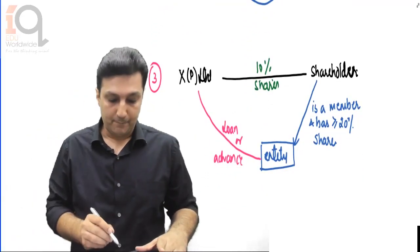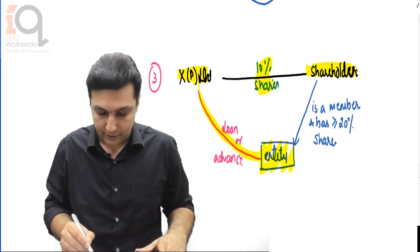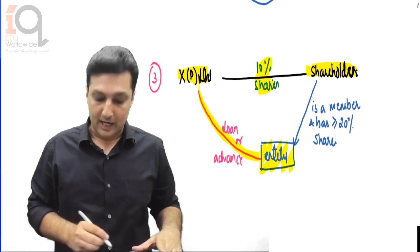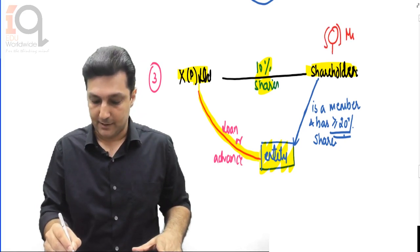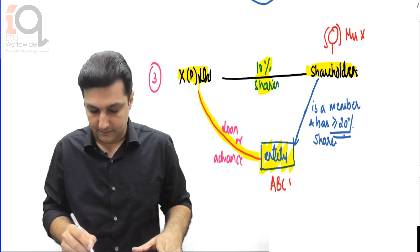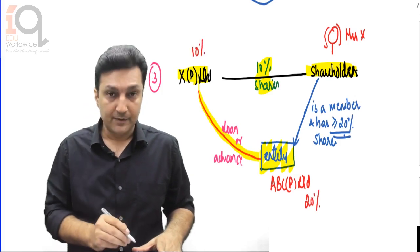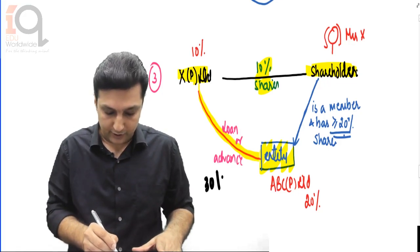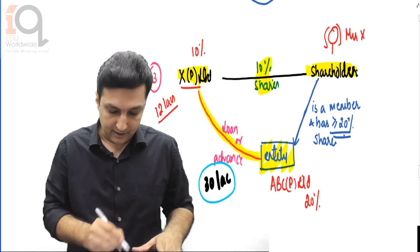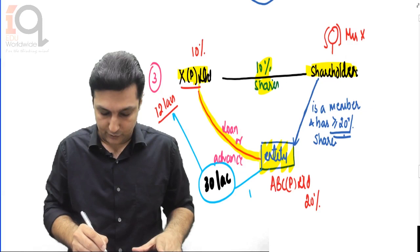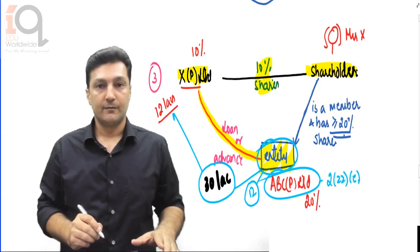Third - and this is the important one: if a closely held company, in which the shareholder has 10% shares, gives a loan or advance to any other entity - could be a firm, company, or proprietary concern - in which this shareholder has substantial interest. For example: Mrs. X has 20% share in ABC Private Limited, and X Private Limited has 10% share. X Private Limited gives ABC Private Limited a loan of 30 lakhs. If X Private Limited's reserves are 12 lakhs at the time of the loan, then this 30 lakh loan - subject to accumulated profits - means 12 lakhs will be treated as deemed dividend under section 2(22)E provisions.